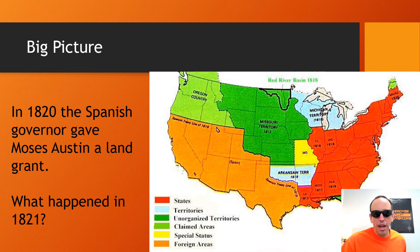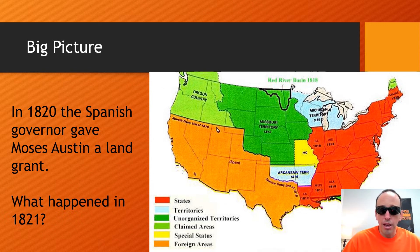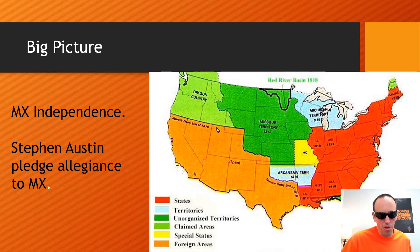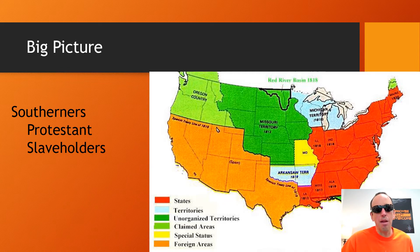In 1820, the Spanish governor gave Moses Austin a land grant for an area of Texas. But in 1821, Mexico declares independence. Stephen Austin pledges allegiance to Mexico — he says it's all good — and Mexico honors the land grant from Spain. However, more Protestants and slaveholders are going to come into Texas, and Mexico is not going to like that.